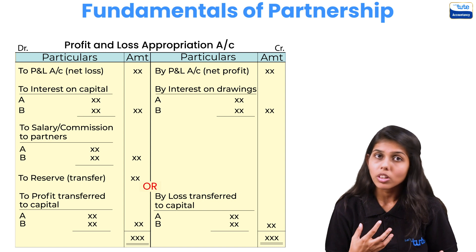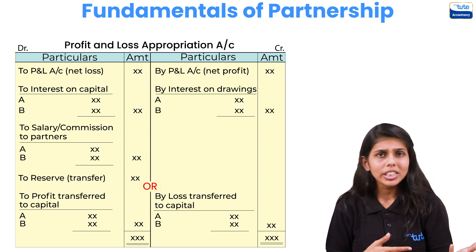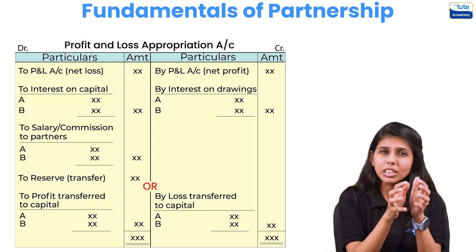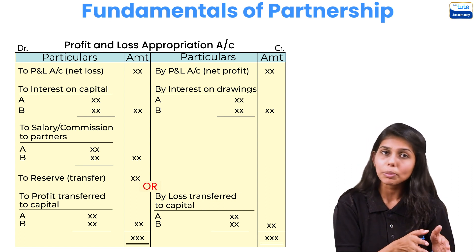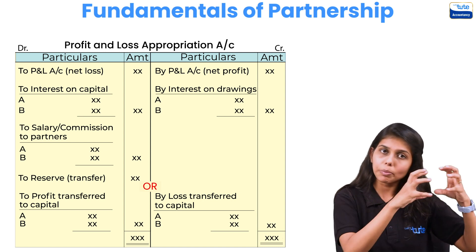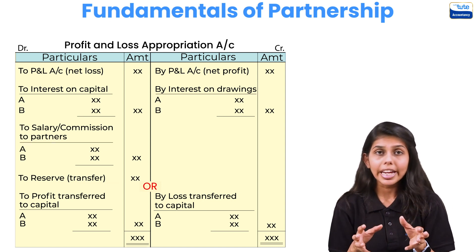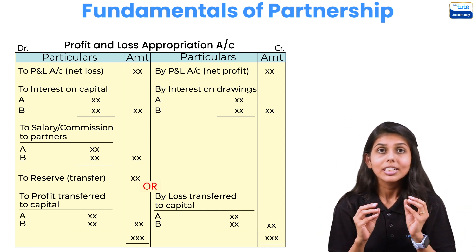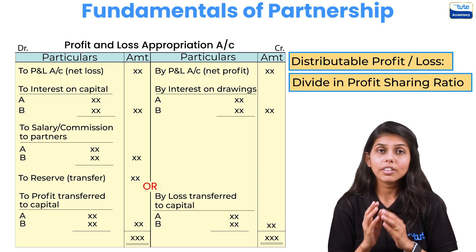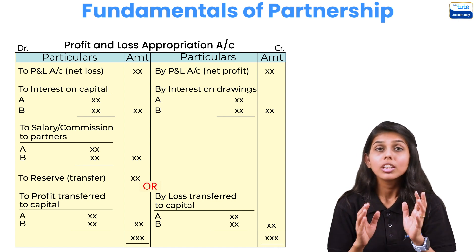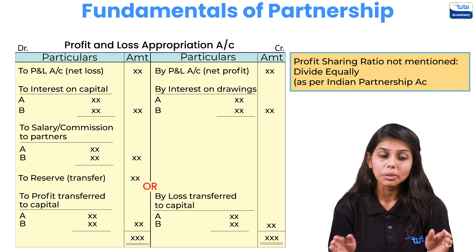There could also be salary or commission to a partner, paid over and above the profit share, if a partner has taken extra efforts. If the firm is making any transfer to reserves — like a general reserve or contingency reserve, keeping part of profit aside for future purposes — that is also debited in the P&L Appropriation Account. Finally, after all these items, the net distributable profit or loss is shared between partners in their profit sharing ratio. If no ratio is given, profits and losses are shared equally as per the Partnership Act.